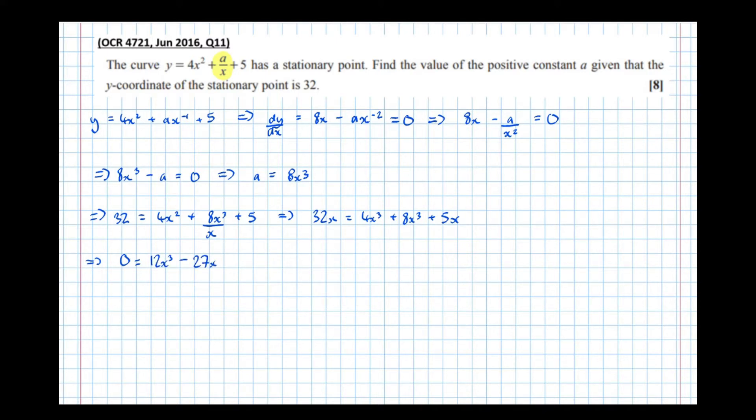Which means that now 0 equals, and I'm going to factorize, x(12x² - 27).